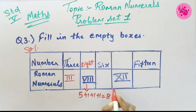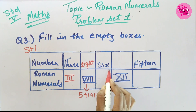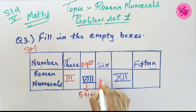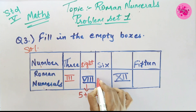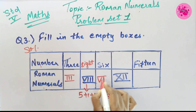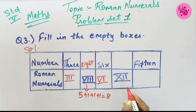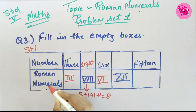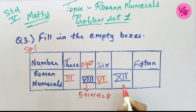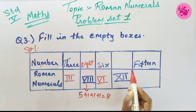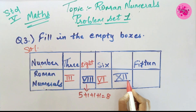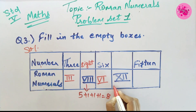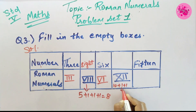Third one: The number 6 is given, and we have to write the Roman numeral, so the answer is VI (V and I). Fourth one: The Roman numeral is given and we have to write the number. The symbols X and II are given, so the answer is 10 plus 1 plus 1, which equals 12.